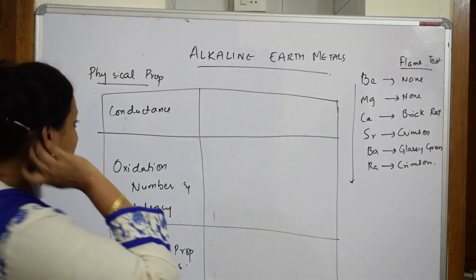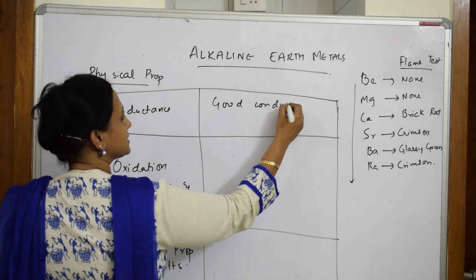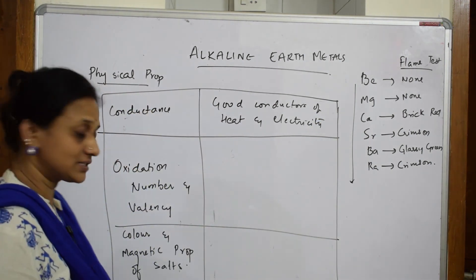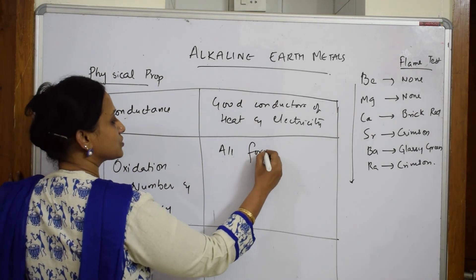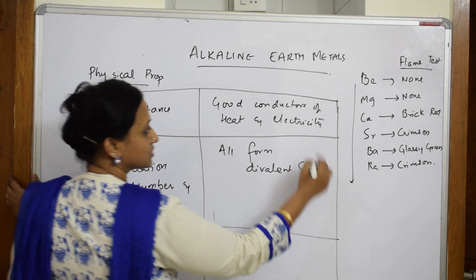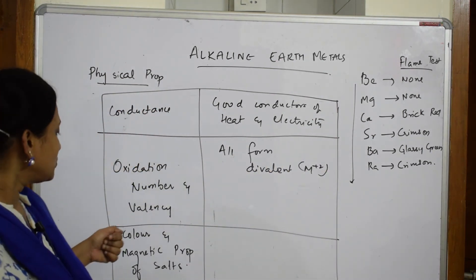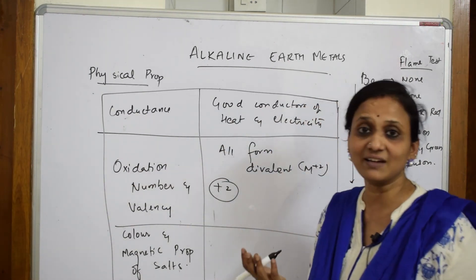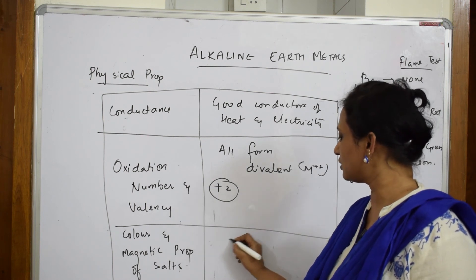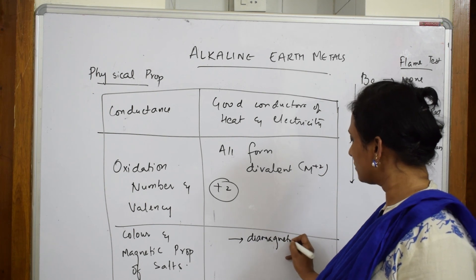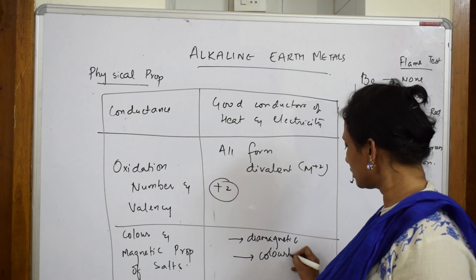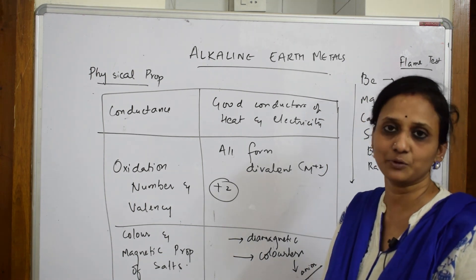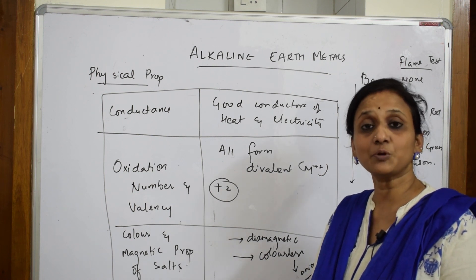For conductance, alkaline earth metals are good conductors of heat and electricity. For oxidation state, they all form divalent ions — M²⁺ — so beryllium²⁺, magnesium²⁺, calcium²⁺, and so on. The valency is +2. Since they form divalent ions, they are all diamagnetic in nature. When diamagnetic, they are colorless in nature, provided the anion present is also colorless — that condition is important. With this, the physical properties are done.